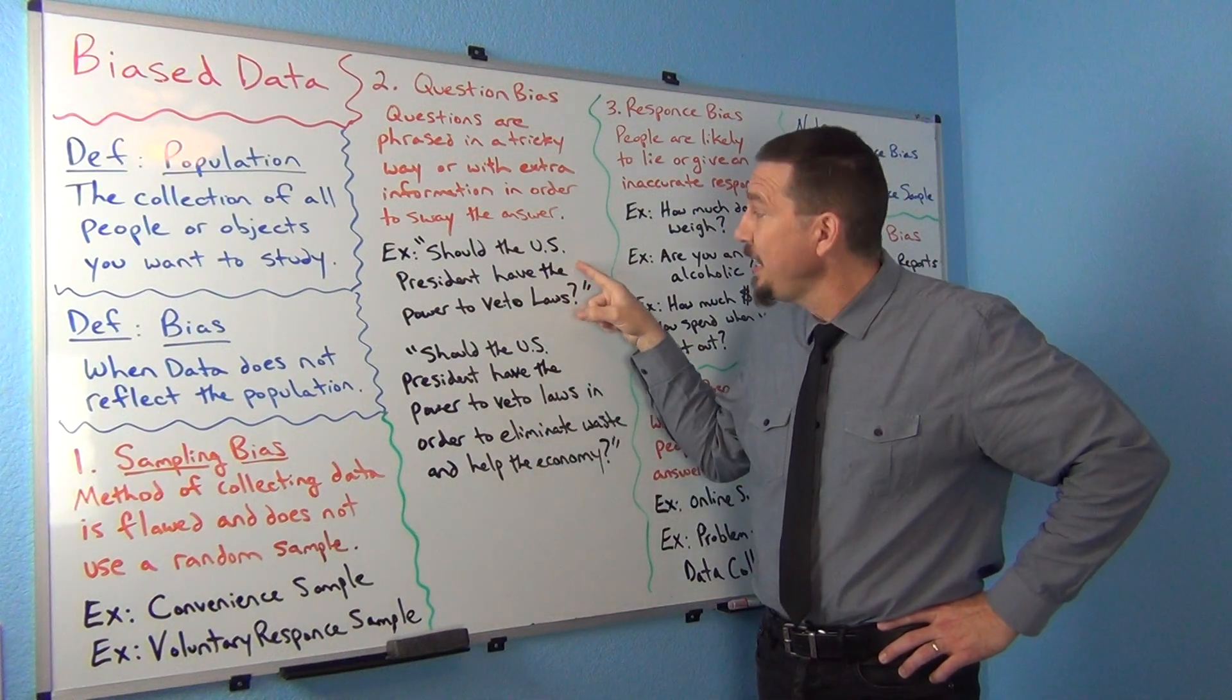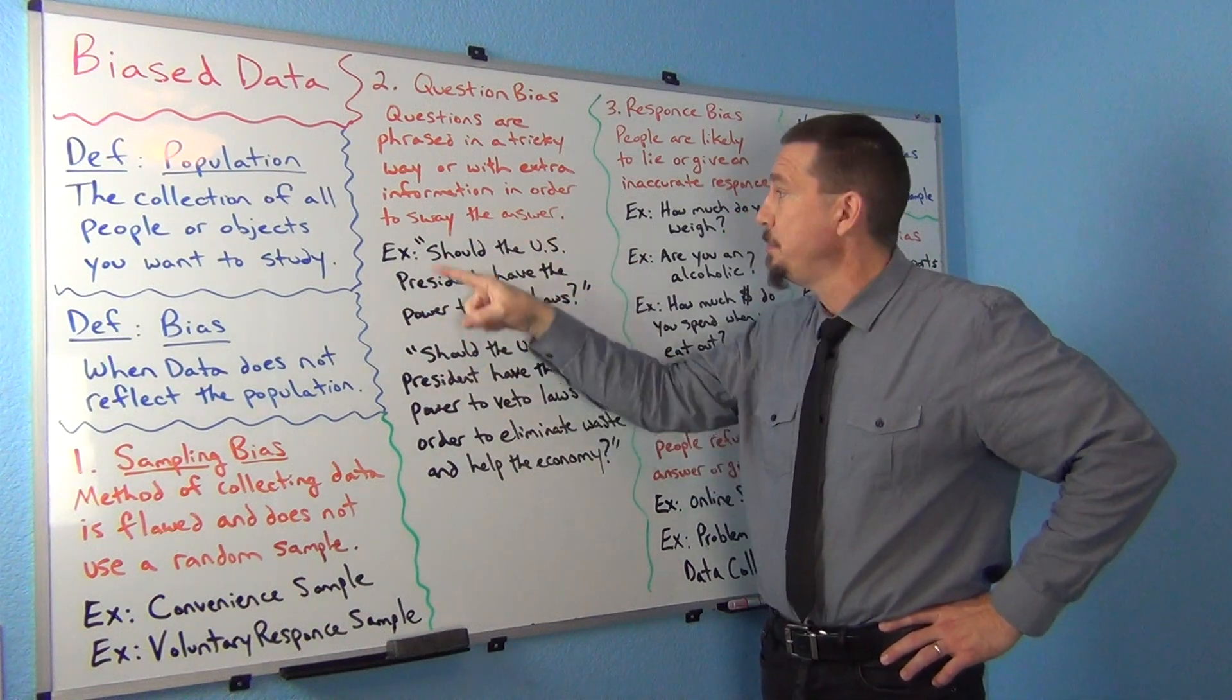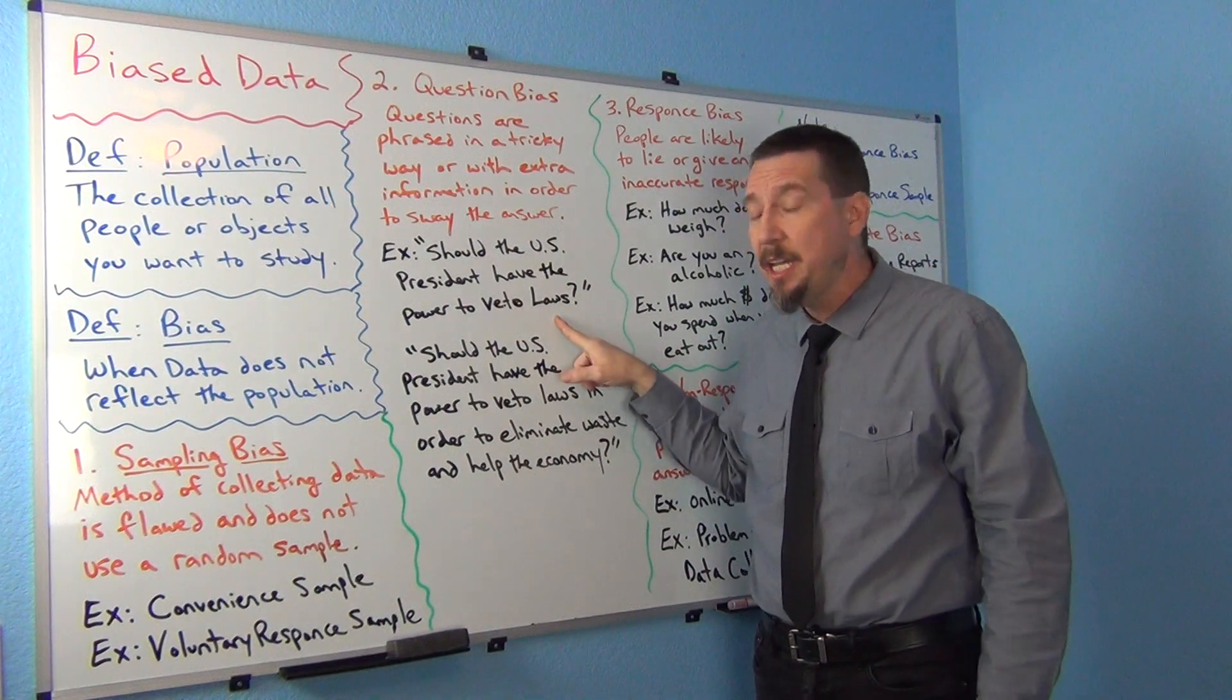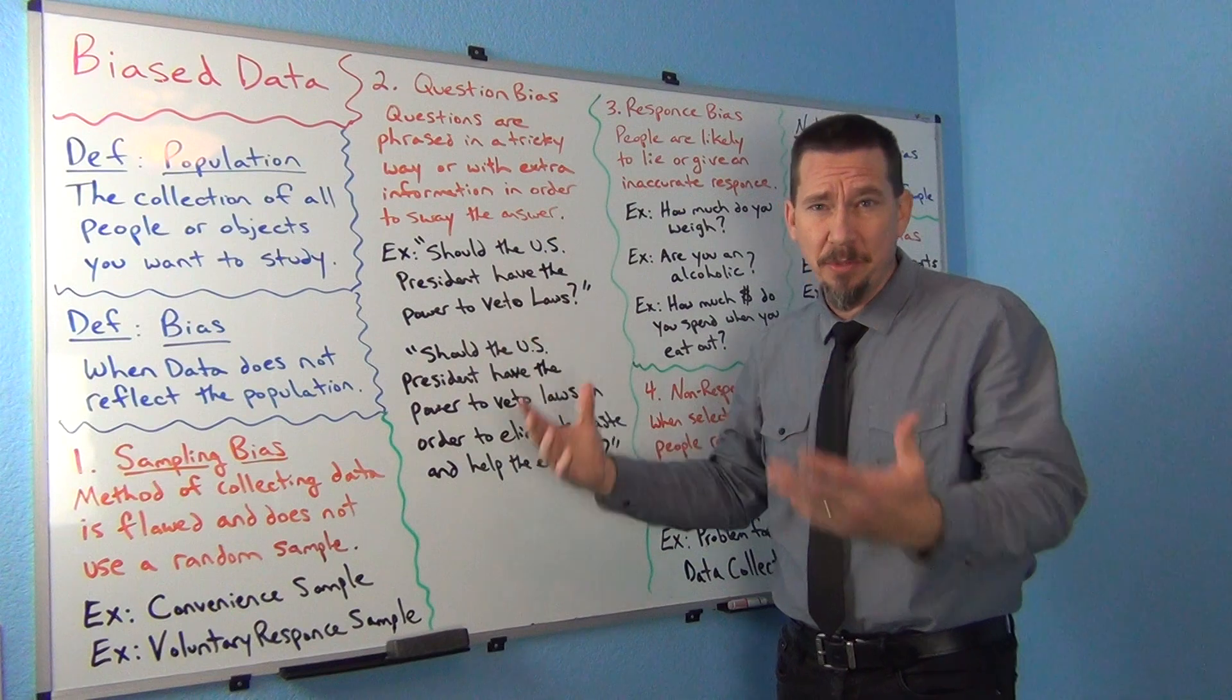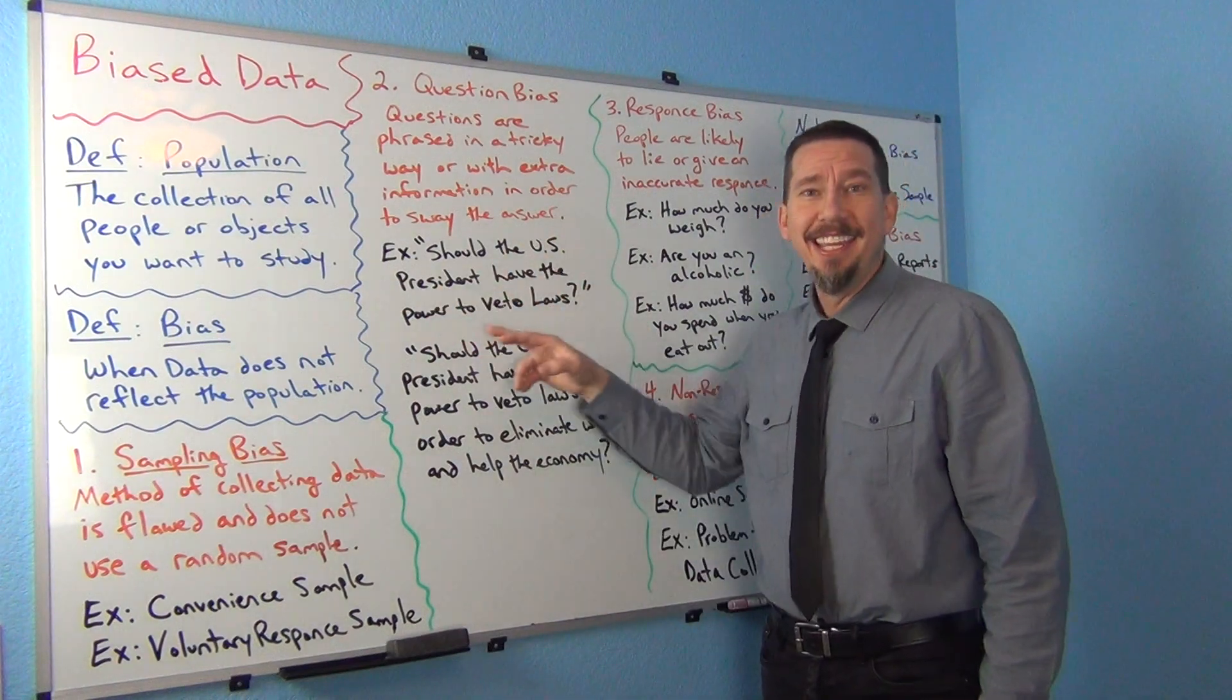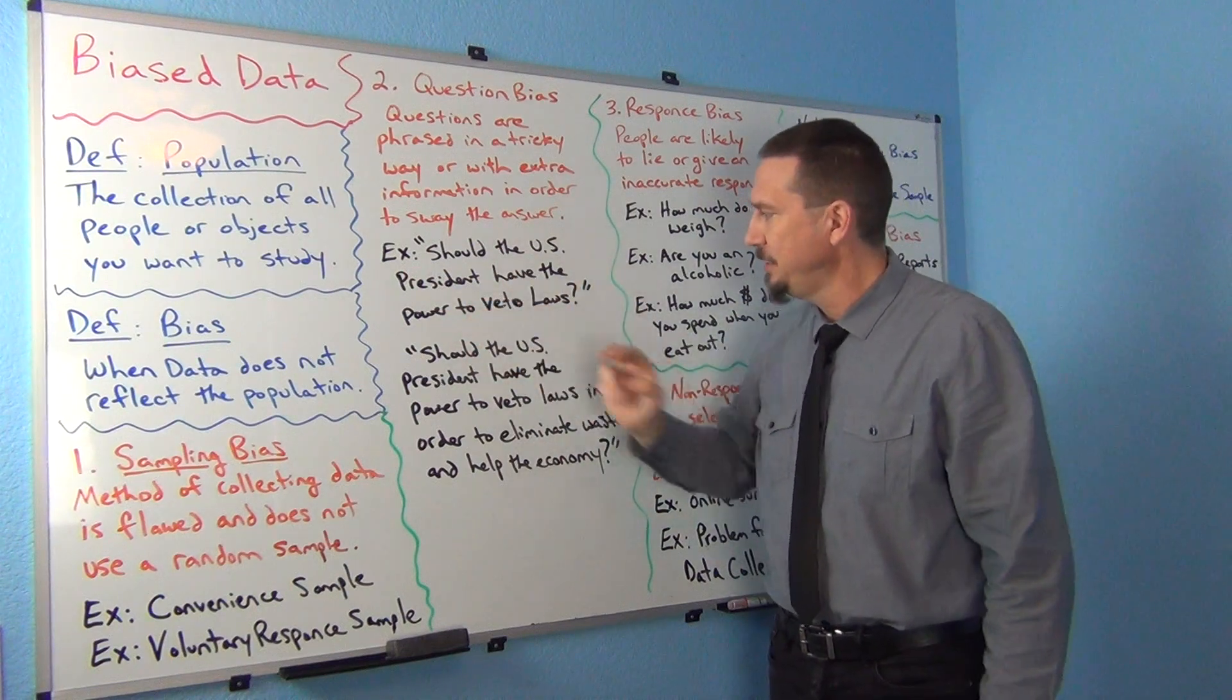When they redid the study later and they had an independent statistics company redo the study and just asked the question more neutrally, then I think at the time they got about a 50-50 response. So it was definitely a lot less people said yes to this when they asked the question this way.